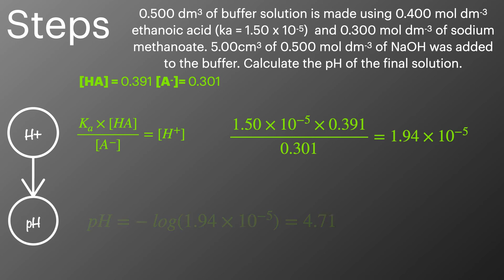We're then going to work out the pH, and to do that we're going to do the minus log of the hydrogen ion concentration, and that will give us a pH value of 4.71.